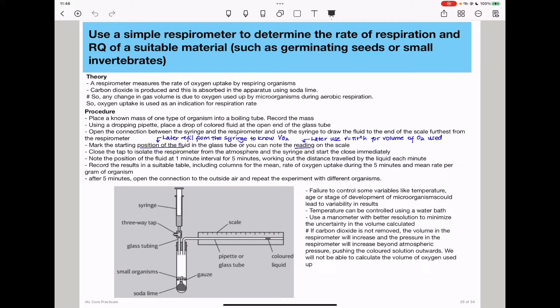So we need to know that our respirometer measures the rate of oxygen uptake by respiring organisms. Carbon dioxide is produced, and this is absorbed in the apparatus using soda lime. So any change in gas volume is due to oxygen used up during aerobic respiration. So oxygen uptake is used as an indication for the rate of respiration.